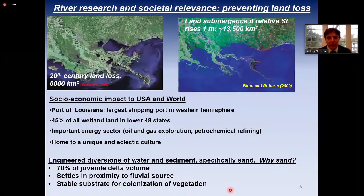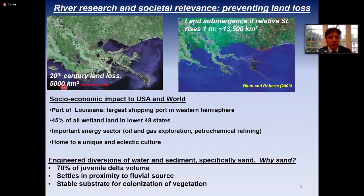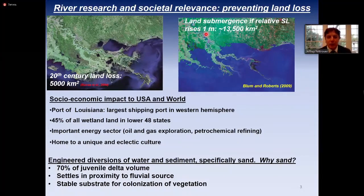The work I'm presenting today is from the lowermost Mississippi River, where there is a strong need to prevent land loss in the Mississippi Delta. The satellite picture shows the Mississippi River moving into the northern Gulf of Mexico. In the 20th century alone, we lost over 5,000 square kilometers of land — deltaic land converted to open water due to a lack of sediment supply and accelerated subsidence. Some predictions have the Mississippi Delta losing up to 13,500 additional square kilometers with just one meter rise of relative sea level, expected by end of the 21st century.